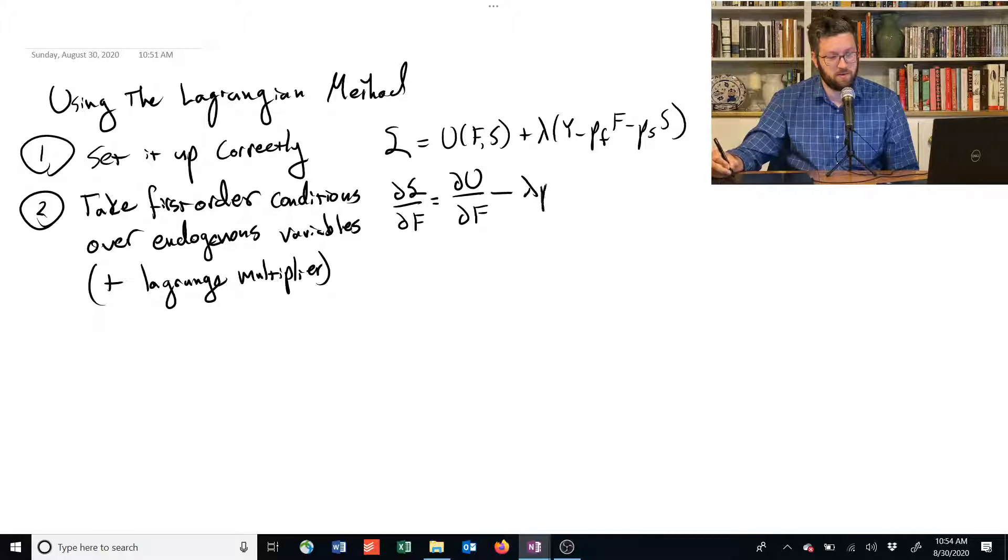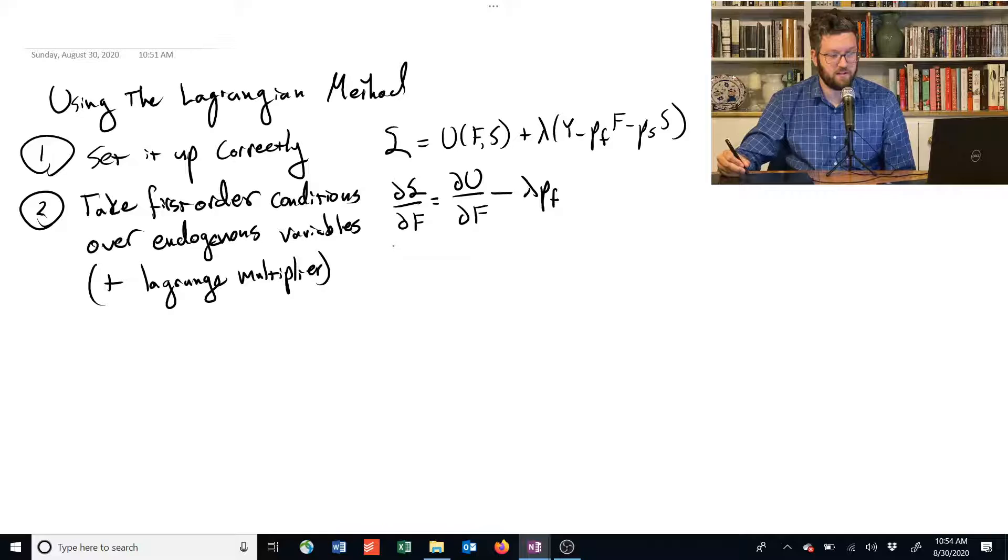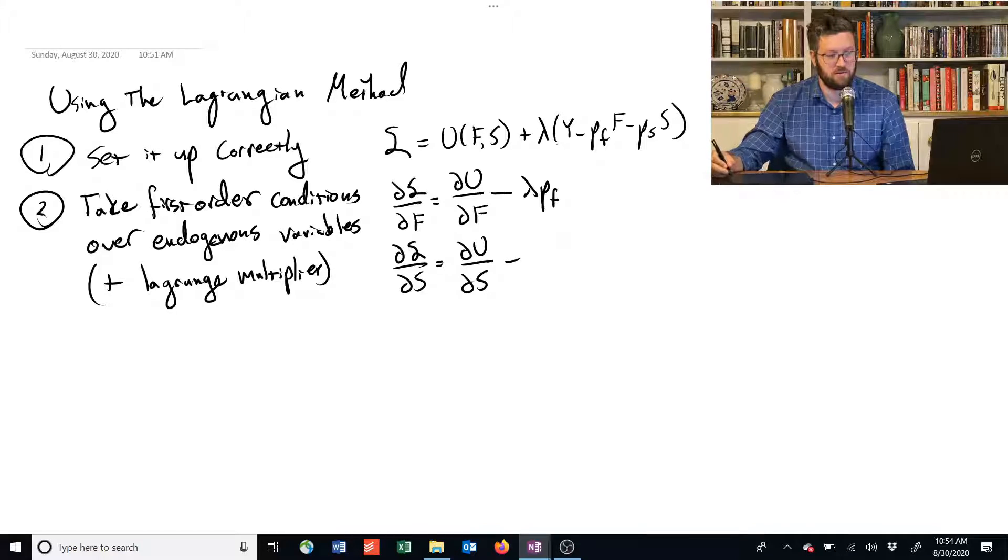And the next partial derivative is going to be shelter, because that's another choice variable. We get the partial derivative of utility function with respect to shelter, minus, looking for it here, ah, there's the S, times these guys.